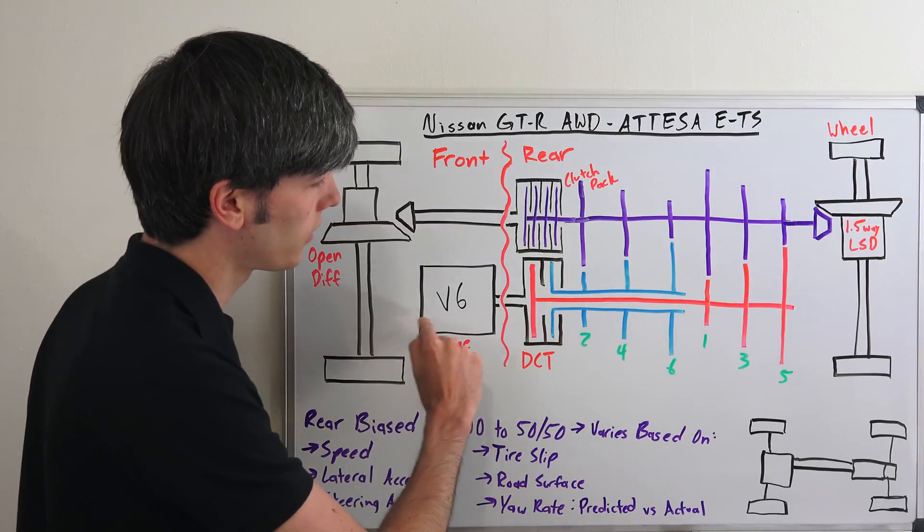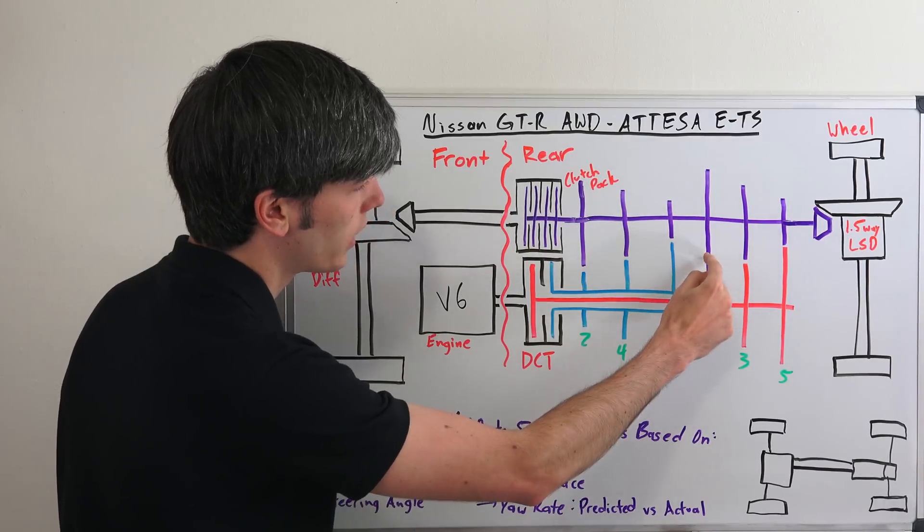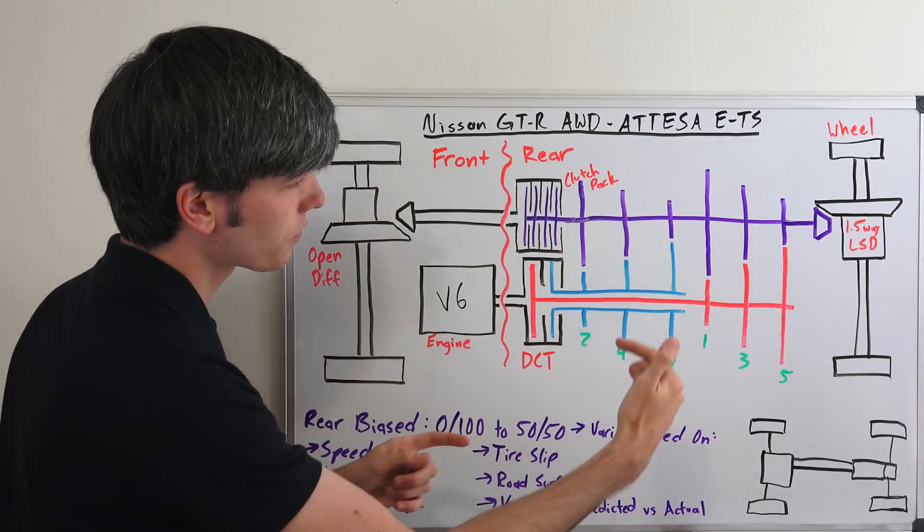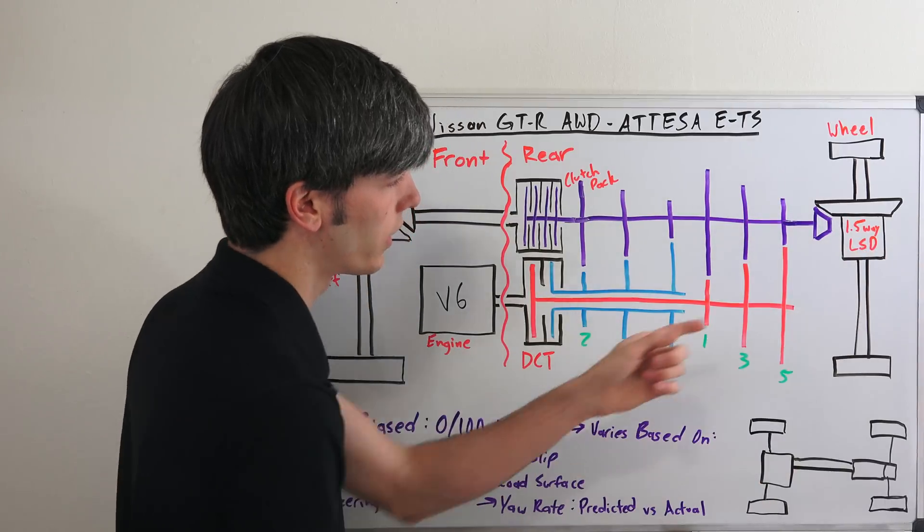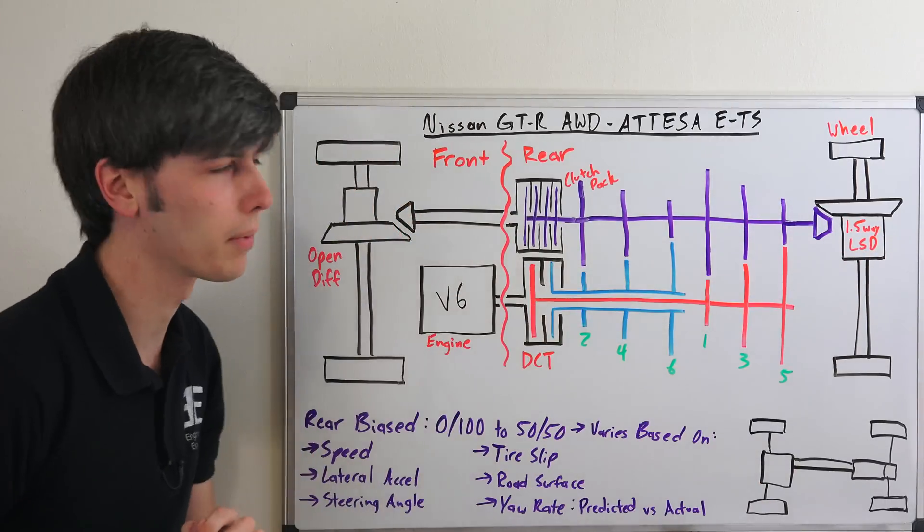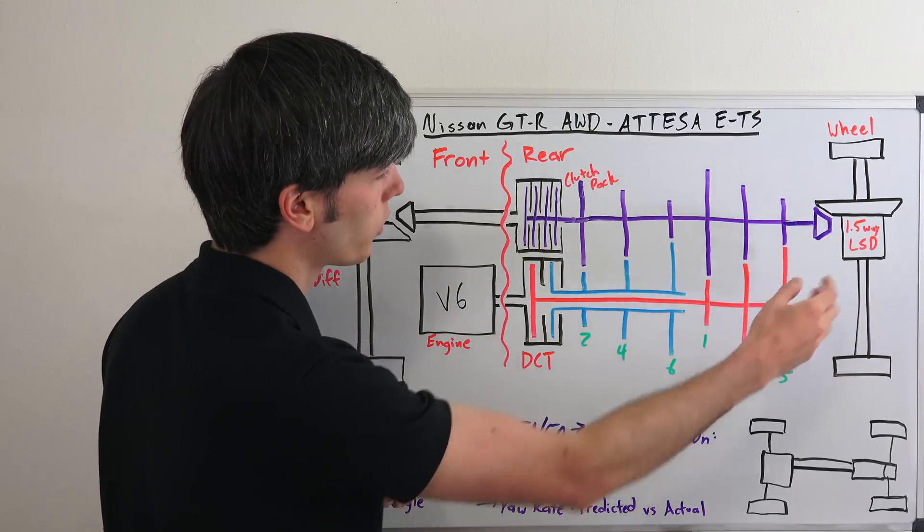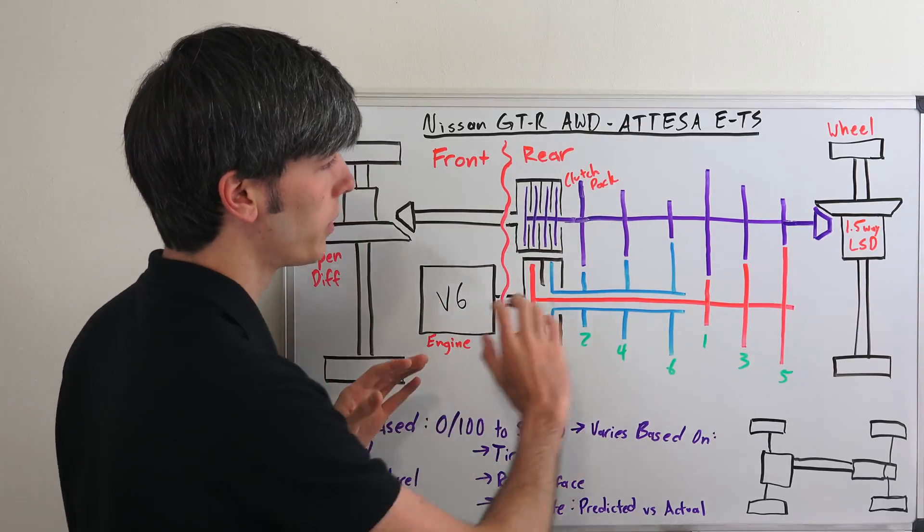So you've got your power coming in. Let's say we're in first gear, it's going to clamp down on this first clutch. That's going to pass from first gear to this gear here, and that's going to rotate this. So as this rotates, that's going to rotate this rear differential. And so in the back it has a 1.5 way mechanical limited slip differential.